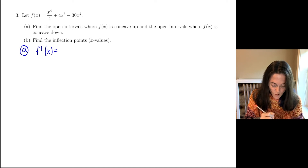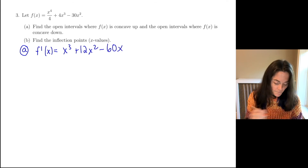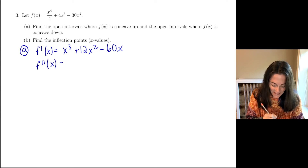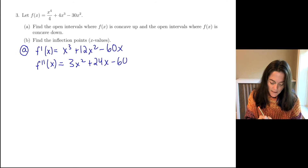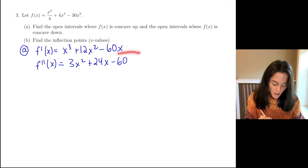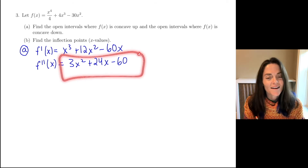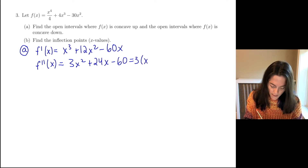First we take the first derivative: we get x cubed plus 12x squared minus 60x. Then the second derivative — we differentiate the first derivative — so we have 3x squared plus 24x minus 60. This is what I need to set to 0. Technically, or does not exist, but you see this is just a quadratic — it's defined everywhere. So the second derivative not existing does not occur in this problem. I can factor out a 3 from every term: 3 times (x squared plus 8x minus 20).